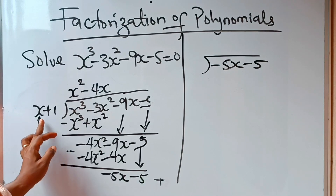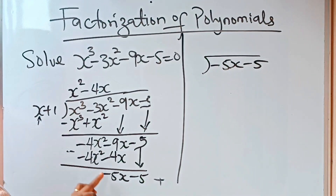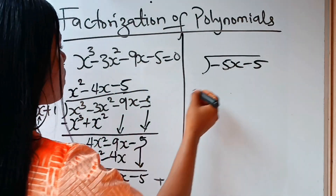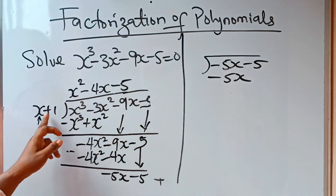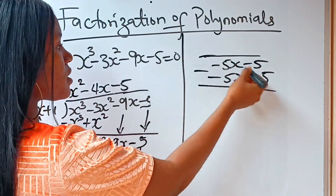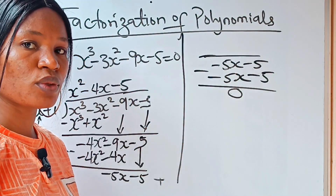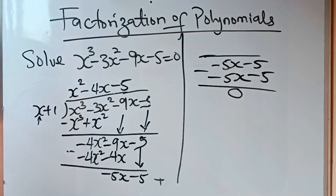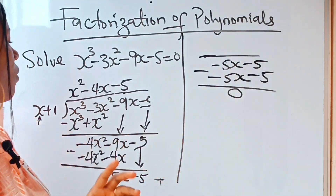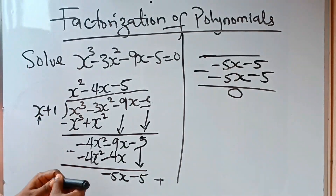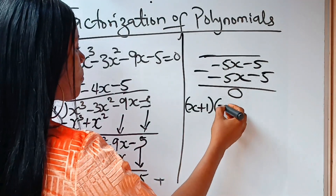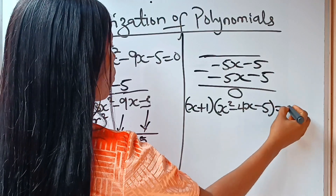So what do we do now? We are going to use x to divide again. When x divides minus 5x we get minus 5. Minus 5 times x gives us minus 5x, and minus 5 times plus 1 gives us minus 5. Notice that we have 0 here already because these terms are the same. That means we are through with the division. So that means we have x plus 1 brackets x squared minus 4x minus 5 is equal to 0.